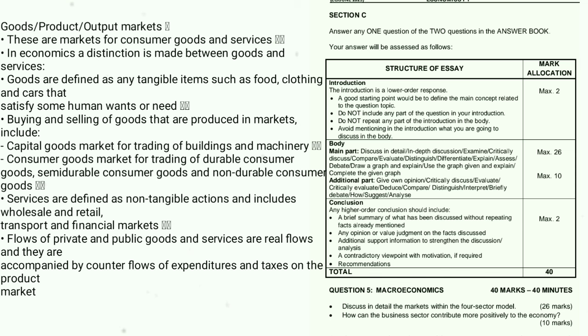Product or output market — these are the markets for consumer goods and services. Goods are defined as tangible items such as food, clothing, and cars. The buying and selling of goods includes capital goods, durable consumer goods, semi-durable consumer goods, and non-durable consumer goods. Services are non-tangible actions and include wholesale, retail, transport, and financial markets. Real flows of goods and services are accompanied by counter flows of expenditures and taxes.